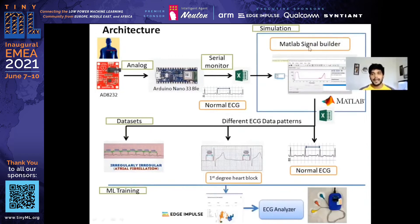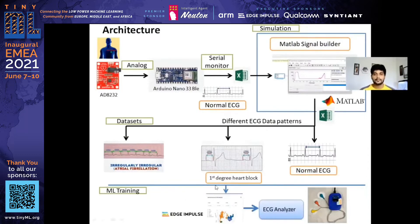I used MATLAB Signal Builder to modify the normal ECG data to look like a first degree AV block and irregular heartbeat like atrial fibrillation cases. Once all the data was ready, I used Edge Impulse software to do the model training, and within Edge Impulse I was able to deploy directly onto my Arduino board.